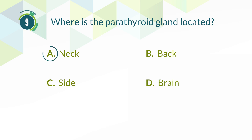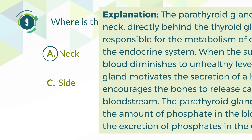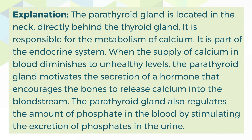The correct answer is A. Neck. Explanation: The parathyroid gland is located in the neck, directly behind the thyroid gland. It is responsible for the metabolism of calcium. It is part of the endocrine system. When the supply of calcium in blood diminishes to unhealthy levels, the parathyroid gland motivates the secretion of a hormone that encourages the bones to release calcium into the bloodstream. The parathyroid gland also regulates the amount of phosphate in the blood by stimulating the excretion of phosphates in the urine.